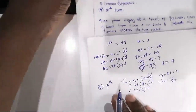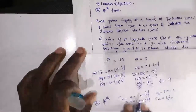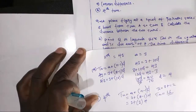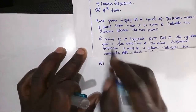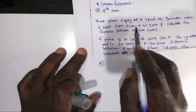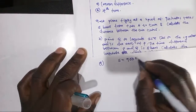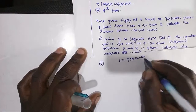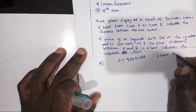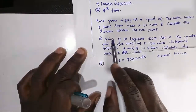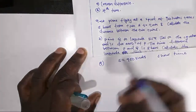Now let's move on to question 9. For question 9, a plane flying at a speed of 900 knots takes 5 hours from town A to town B. Calculate the distance between the two points.